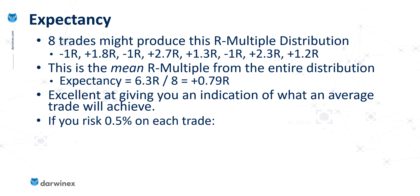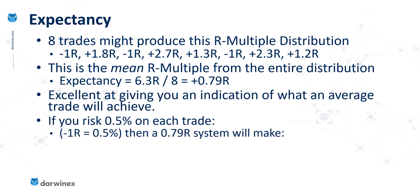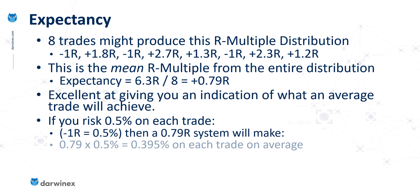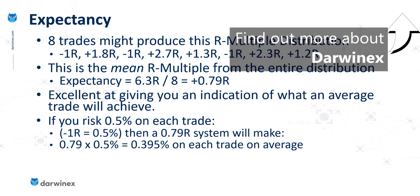Let's look at a quick example. Let's say you risk 0.5% of your equity on each trade — this is the maximum risk if your stop loss were to be hit. Using the expectancy, we know that a minus 1R trade is 0.5%, and therefore we can calculate that a system with a 0.79R expectancy will make, on average, 0.39% on each trade. This is really valuable information because now, based on how many trades this system produces, we can get a good indication of the potential return from that system.